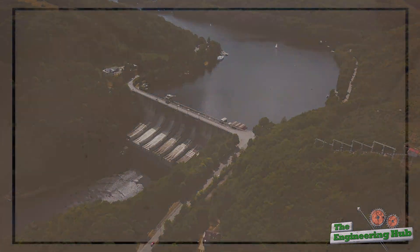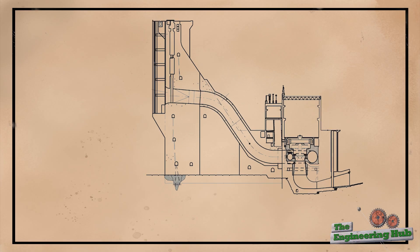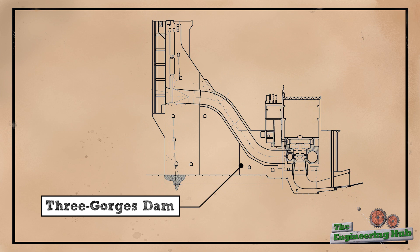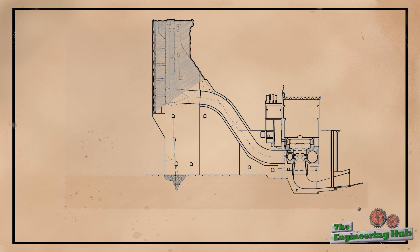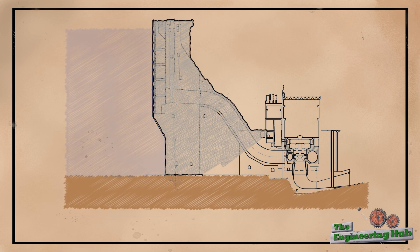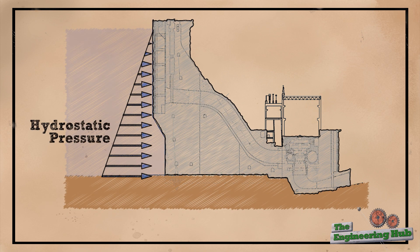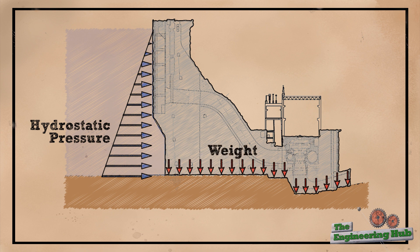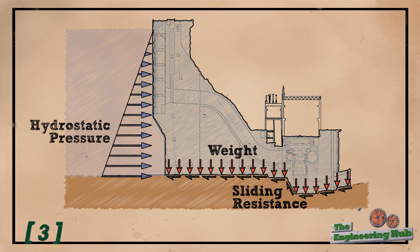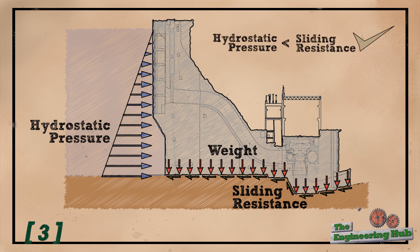These dams are also known as gravity dams because they use their massive weight to produce large enough friction forces to hold back the water reservoir. Due to their massive size, these structures usually do not suffer from high internal stresses. The governing failure mode comes down to the sliding resistance between the dam and the ground beneath it. Often, gravity dams incorporate a shear key which helps generate a larger resistance to sliding.